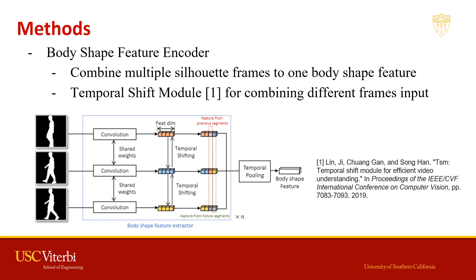For the body shape feature encoder, we combine multiple silhouettes into one body shape feature. We use a temporal shift module for combining different frames after temporal pooling. Since the same person across the sequence is consistent with their body shape, this method is useful for finding one representation for the person's body.